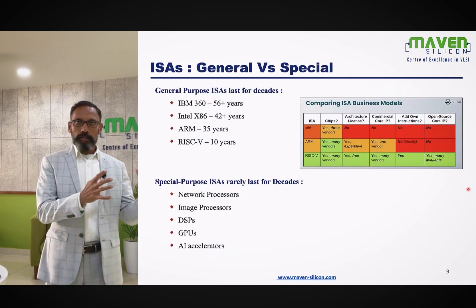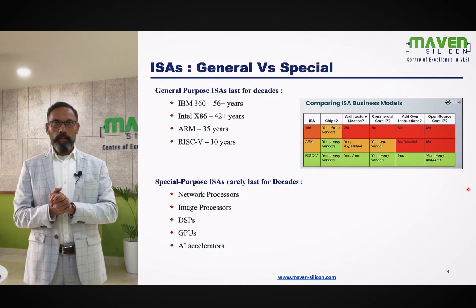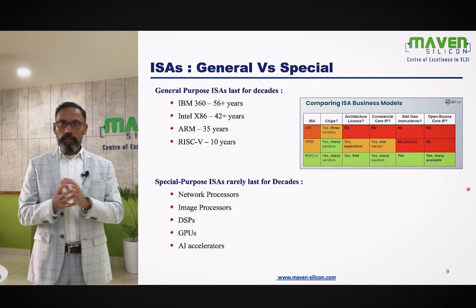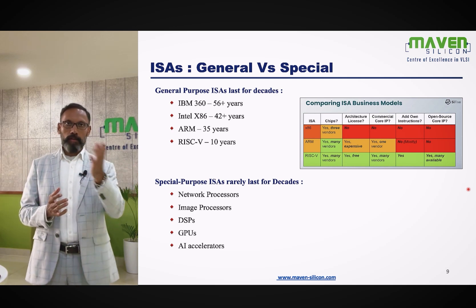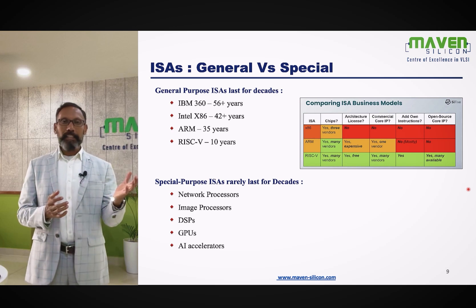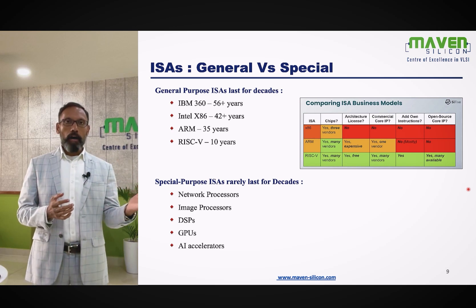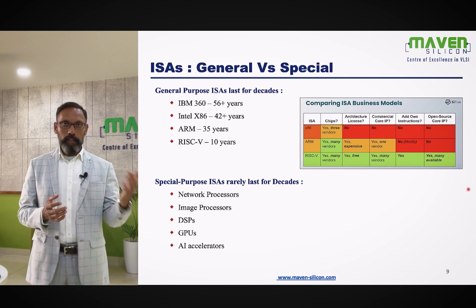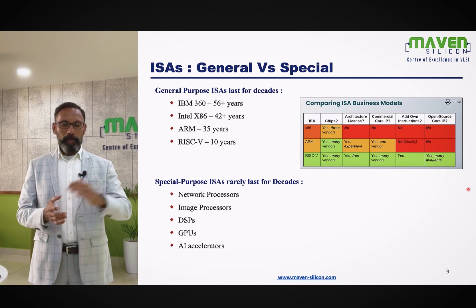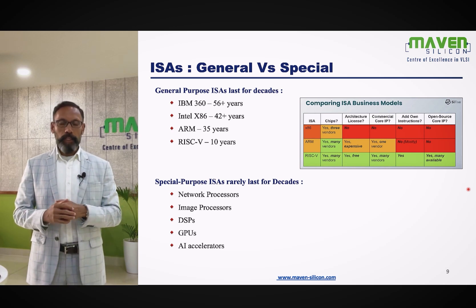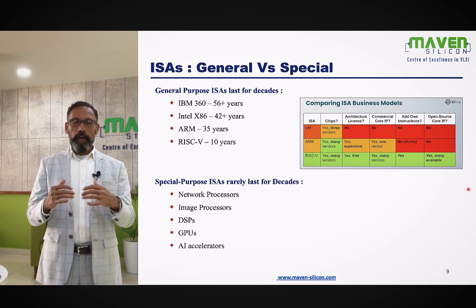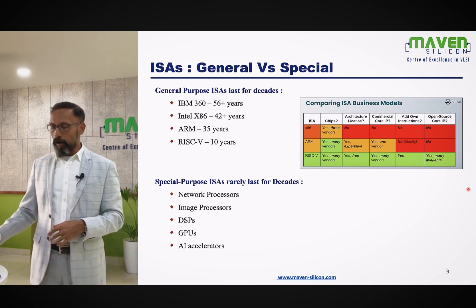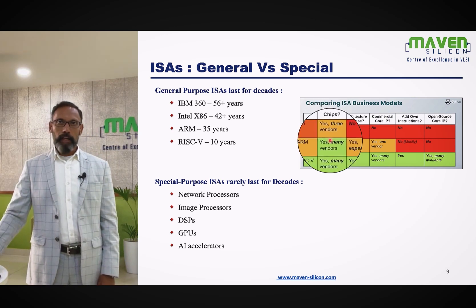As I mentioned, there are various general purpose and special purpose ISAs. General purpose ISAs survive for decades: IBM processor for more than 50 years, Intel's x86 for more than 40 years, ARM for more than 30 years, and RISC-V continuing for more than 10 years. But when it comes to special purpose ISAs, they don't survive for decades. Let's compare RISC-V ISA with x86 and ARM to understand the advantages of RISC-V.